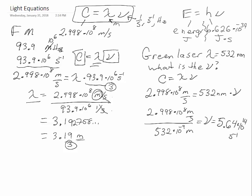For the green laser, 2.998 times 10 to the 8th meters per second equals 532 nanometers times the frequency. Nano is 10 to the negative ninth, so substitute that for the prefix. When you divide both sides by 532 times 10 to the negative ninth meters, the meters cancel out. You're left with inverse seconds, so the frequency is 5.64 times 10 to the 14th inverse seconds.